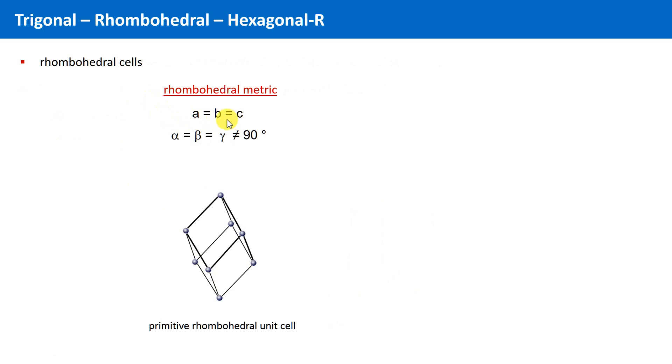However, the angles are also identical, but unequal to 90 degrees. So, a rhombohedral unit cell looks like this.